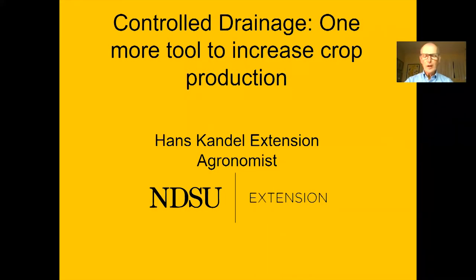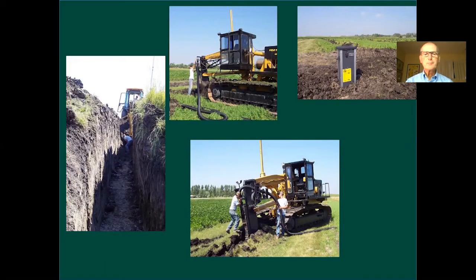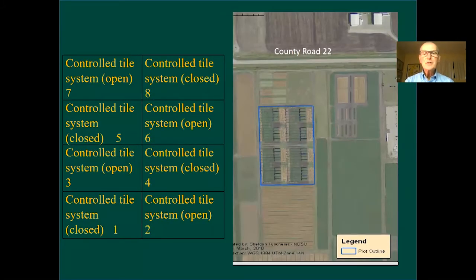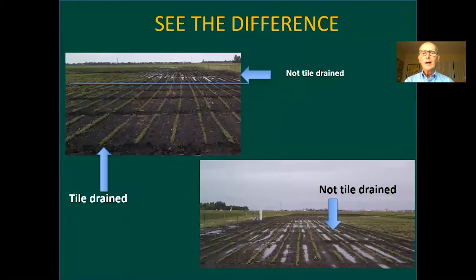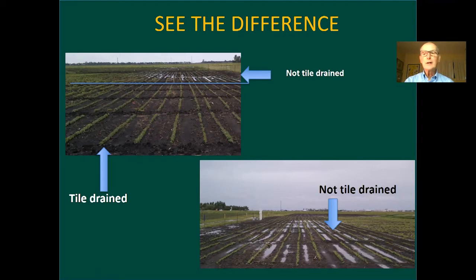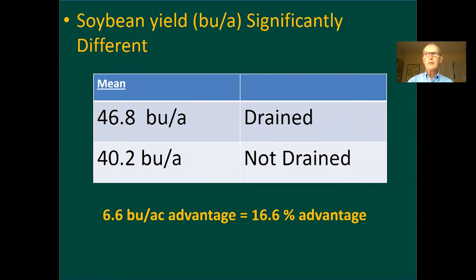In this section I will describe some of the results we found at the research site. The site has eight different blocks where we have a tile control structure and two observation wells per block to monitor the water table. When you put in tile, you can see that water is removed from the soil, whereas where there is no tile, water is standing in the field. With water standing in the field we can anticipate yields will be quite a bit lower. In this specific case the yield disadvantage was about 6.6 bushels, which equals close to 17 percent difference between tile drains and non-tile drains.